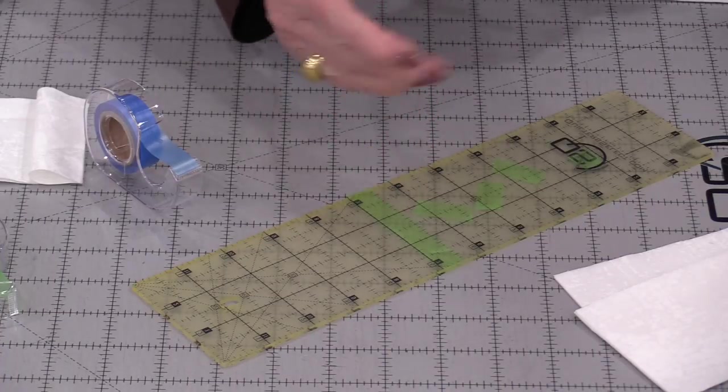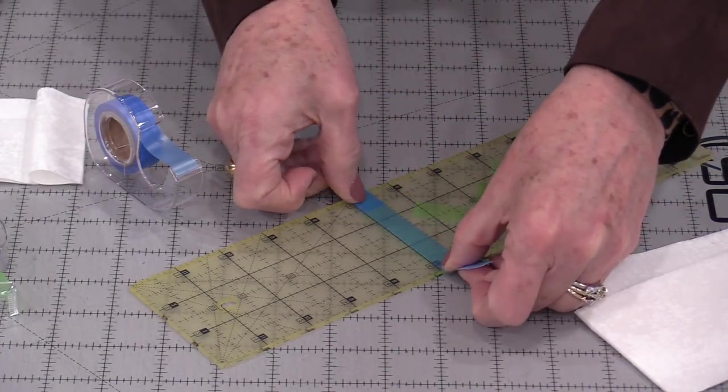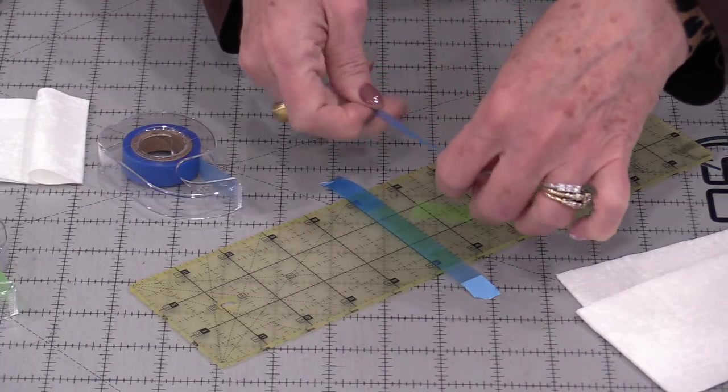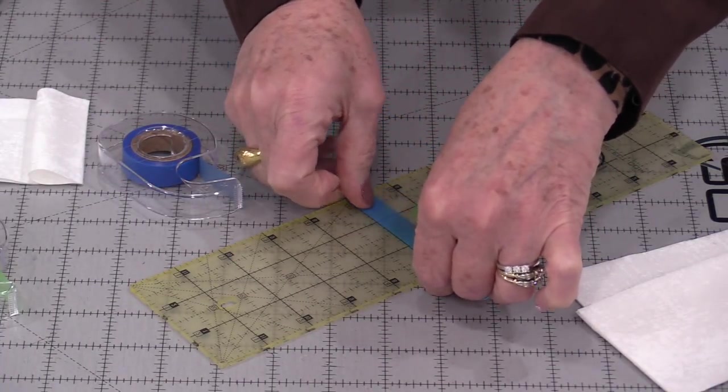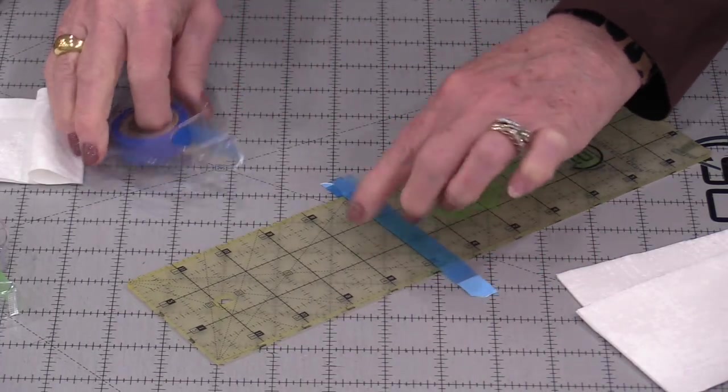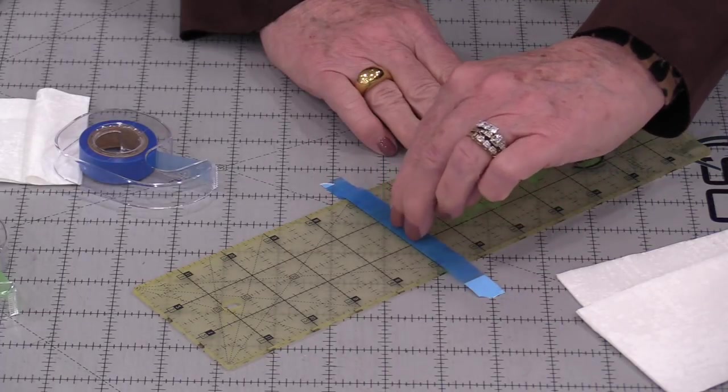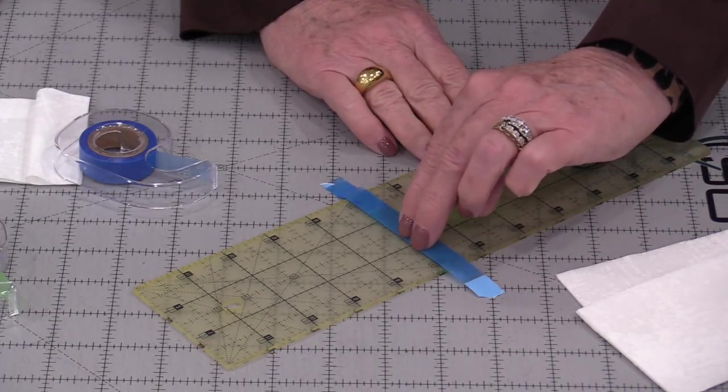We can also build a ledge. Right along that mark I can put 3 or 4 different layers of this tape. That is giving me a lip so that the fabric will not go over.